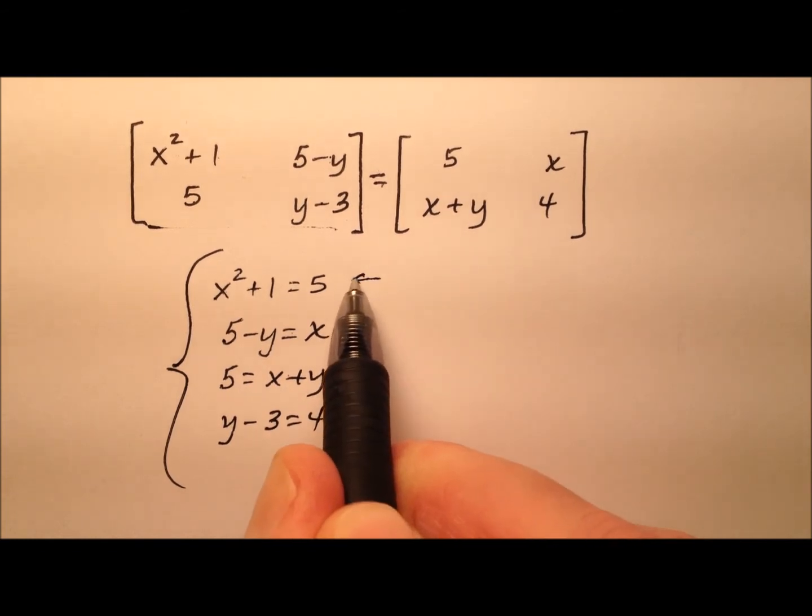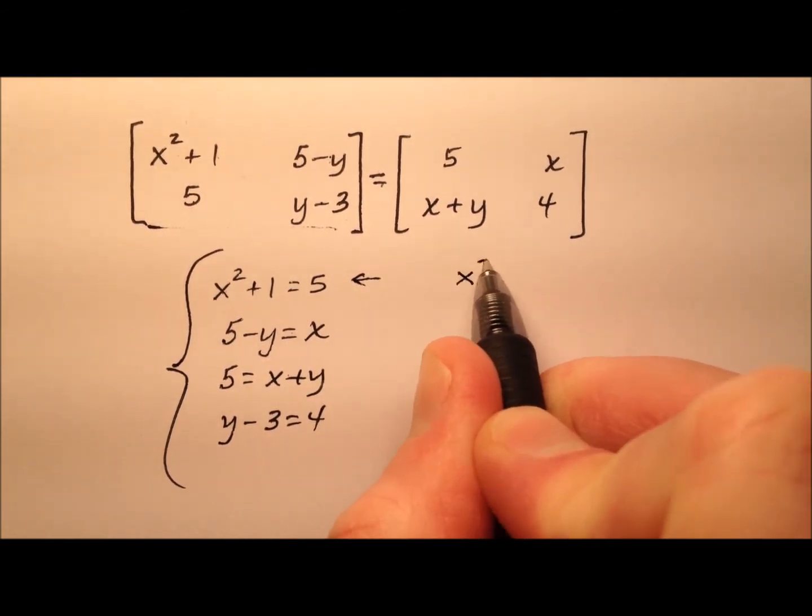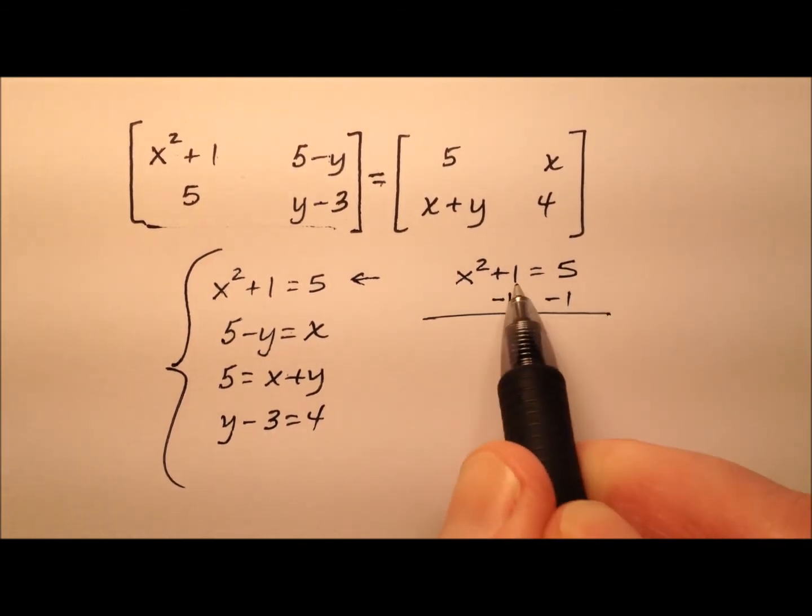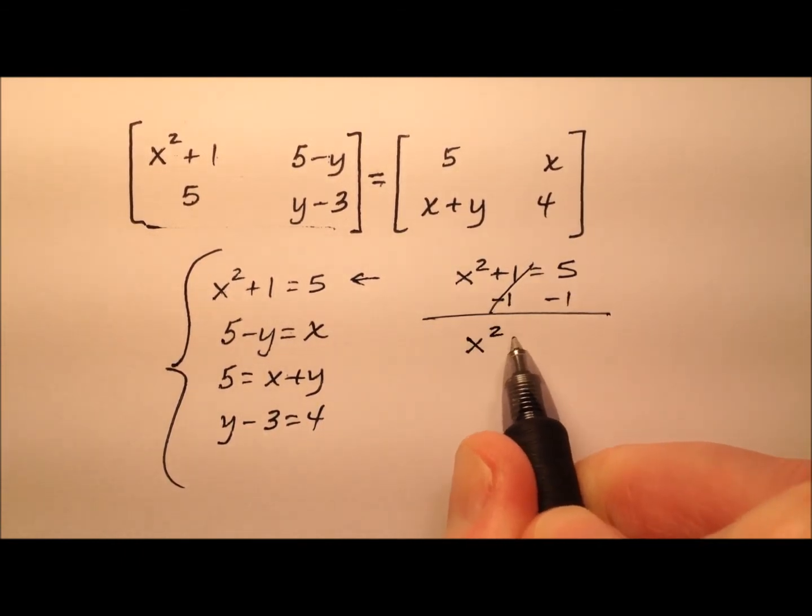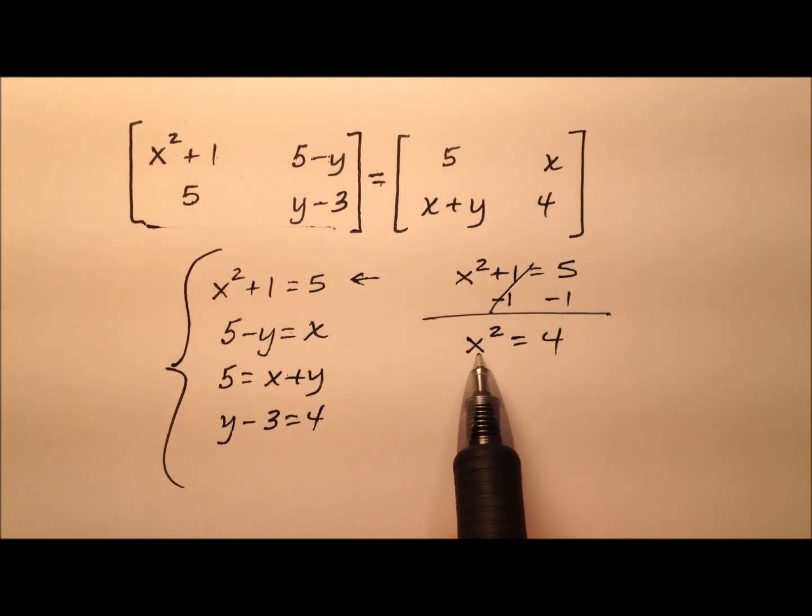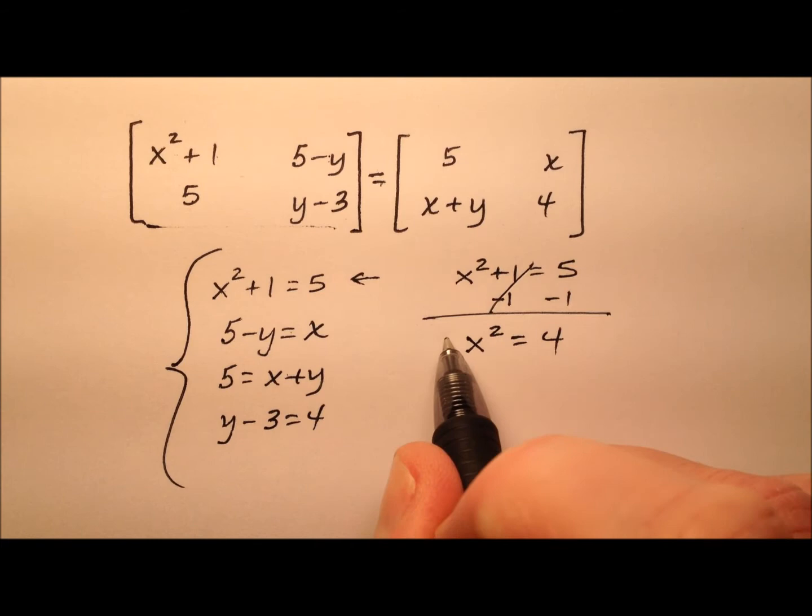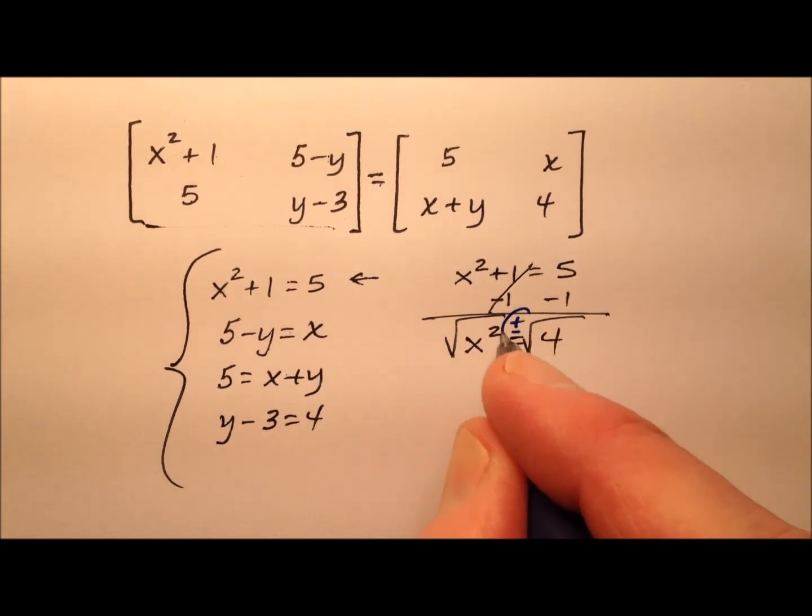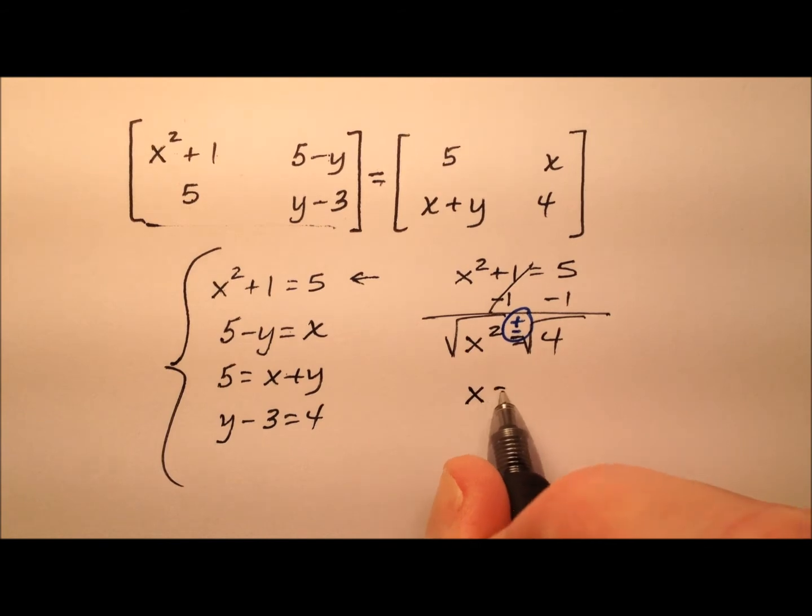Let's go ahead and look at this first one. We have x squared plus one equals five. If I subtract one from both sides, I have x squared equals four. To get this x by itself, I'm going to take the square root of both sides. But remember, I always need to include this plus or minus. So it looks like the value of x is going to be plus or minus two.